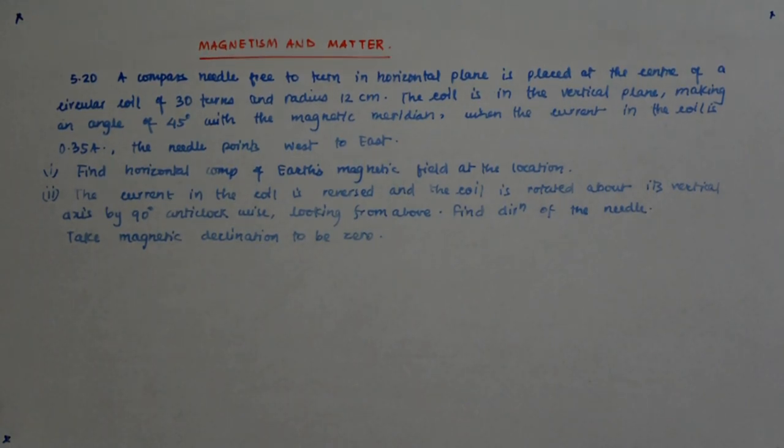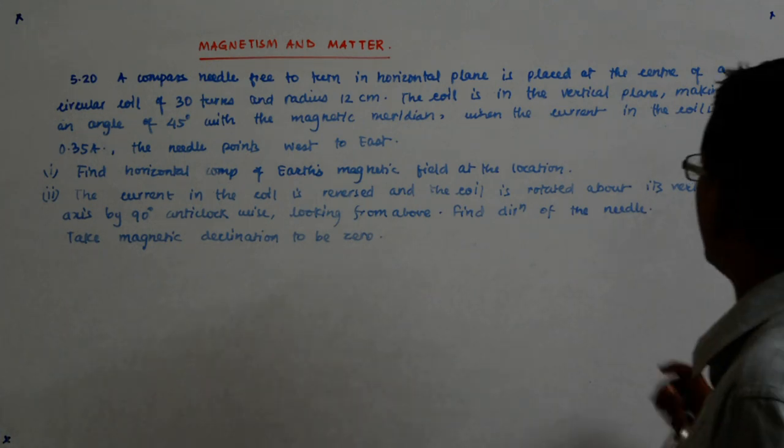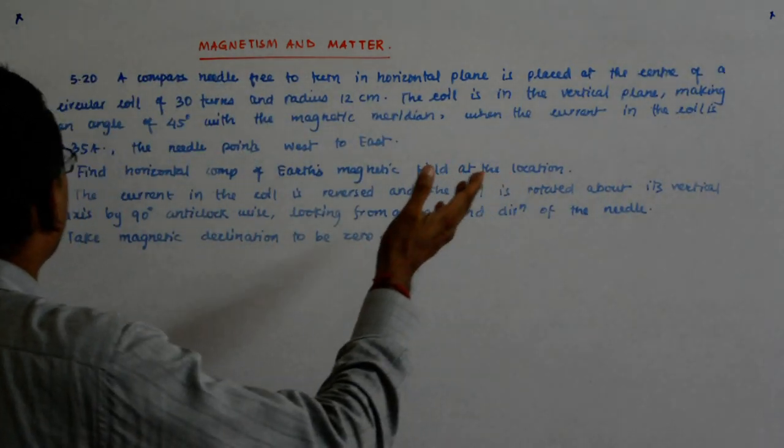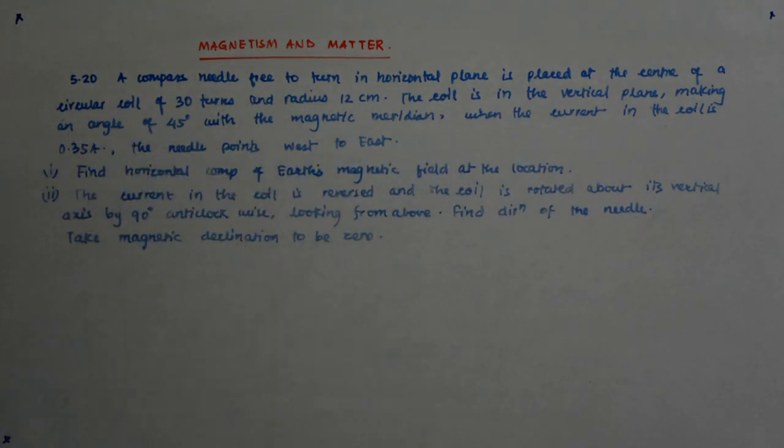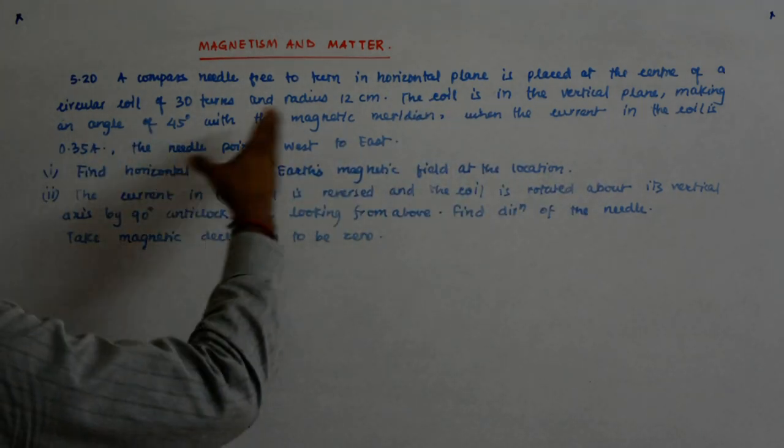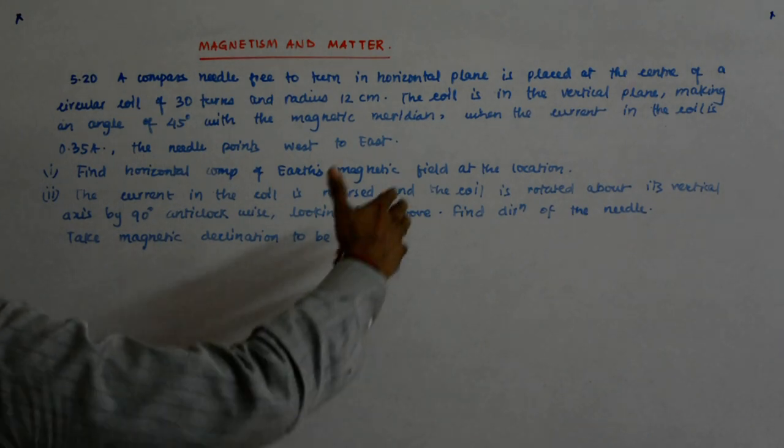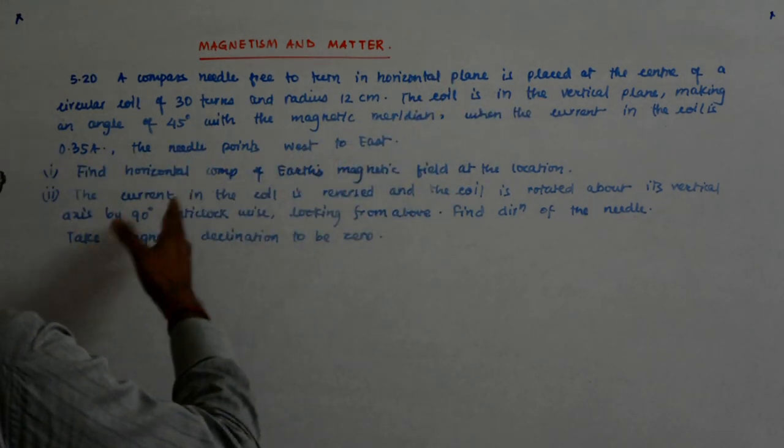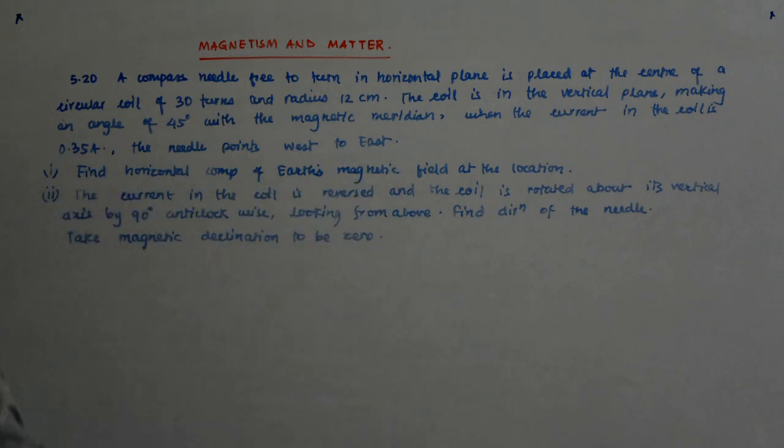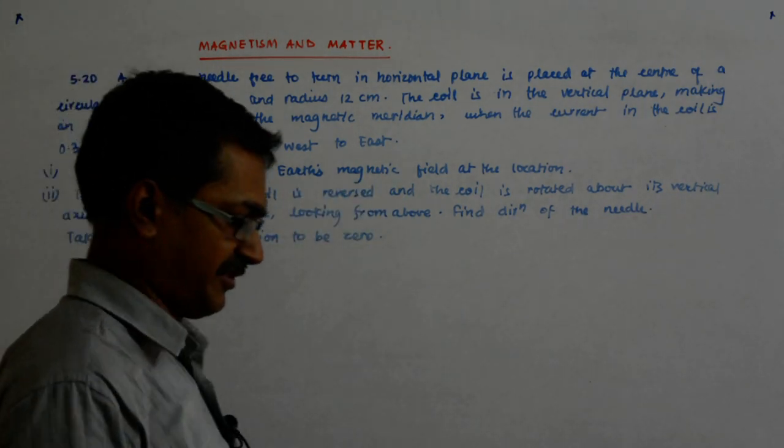Let us try to solve this problem. A compass needle free to turn in horizontal plane is placed at the center of a circular coil of 30 turns, radius 12 centimeter. The coil is in vertical plane making an angle of 45 degrees with the magnetic meridian. When the current into the coil is 0.35 amperes, the needle points west to east. Find horizontal component of Earth's magnetic field at the location.